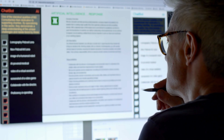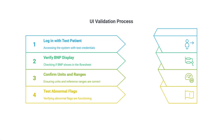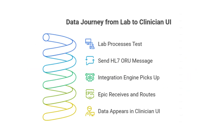Once it's configured, it's time for rigorous testing. You log in with a test patient, ideally with predefined scenarios covering normal BNP values, high values, and low values. You verify everything: Does BNP show up in the correct flow sheet? Are the units right? Are the reference ranges accurate? Are the abnormal flags — high/low indicators — working precisely as they should? This validation step is where you catch potential patient safety issues before they become real-world problems. I've spent countless hours confirming that a single decimal point isn't out of place, because that tiny error could change a whole treatment plan.